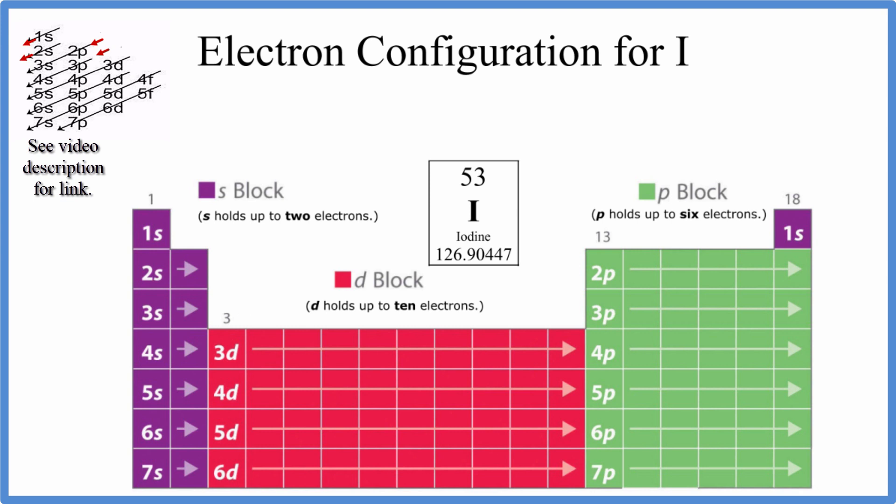You can use this chart here to write the electron configurations. There's a link in the description to do that. I like this method where we use the periodic table and it's broken up into these orbital blocks. I think it's a much better way to do it. So let's try this way.